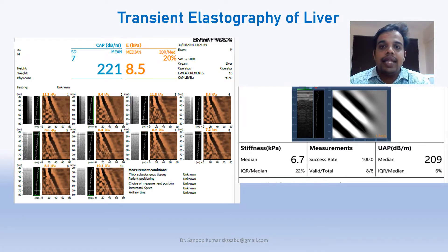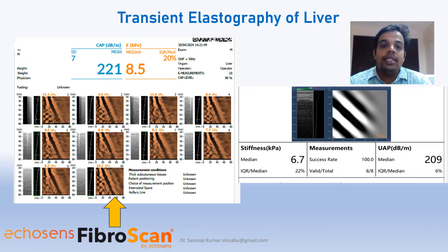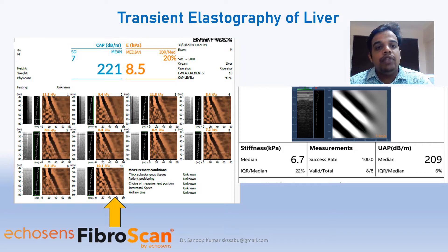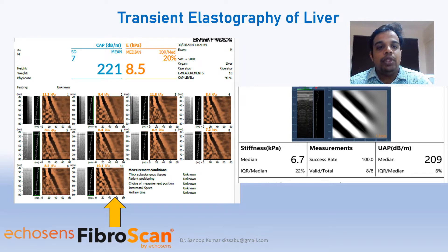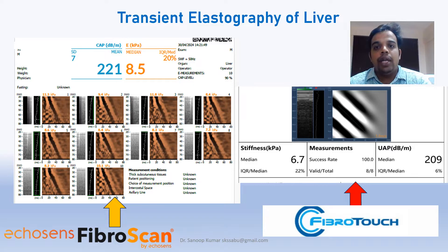Coming to Transient Elastography of the Liver — in India, the two commonly available types of results you would encounter in practice are shown in two panels. The left panel is the Fibroscan, a product of Echosense, a US-based company. Most standardization data for liver studies are based on Echosense's Fibroscan machine. More recently, you will also see reports from FibroTouch, an Indian-based company that produces the same Transient Elastography 1D probe study.